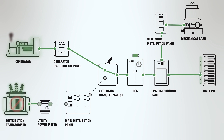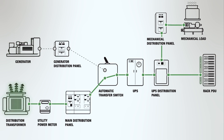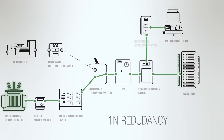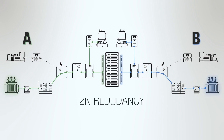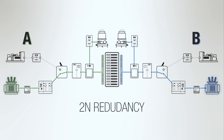When the utility feed comes back on, the ATS communicates back to the generators and allows them to go offline. This is an example of 1N redundancy, with a small percentage of redundancy to individual parts. Tier 3 and Tier 4 data centers require 2N redundancy, which is a mirrored system with two separate points of independent distribution, ultimately feeding two separate rack PDUs, and an AB feed that typically supplies power to A and B power supplies within the IT device for complete redundancy of power.